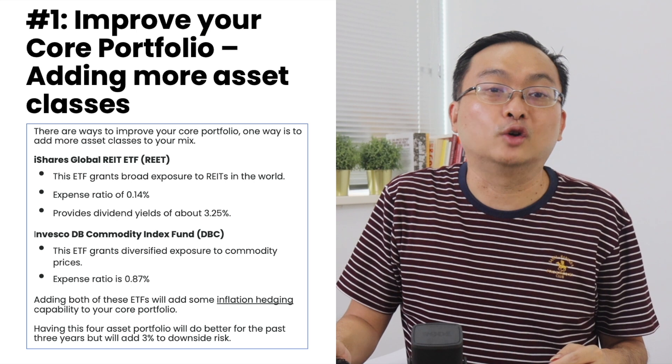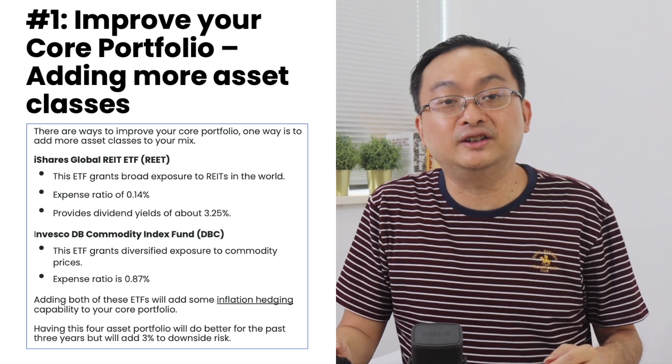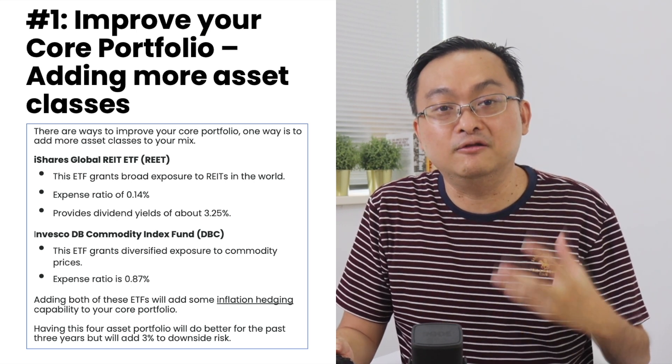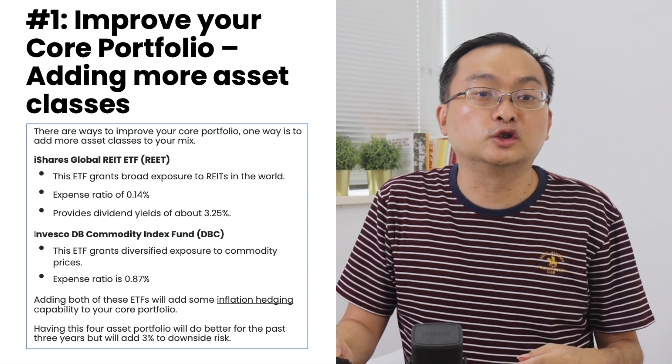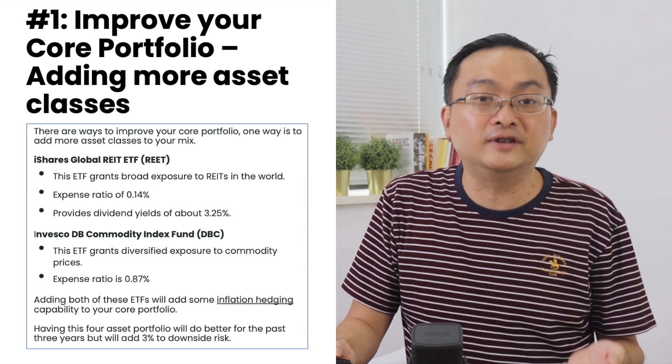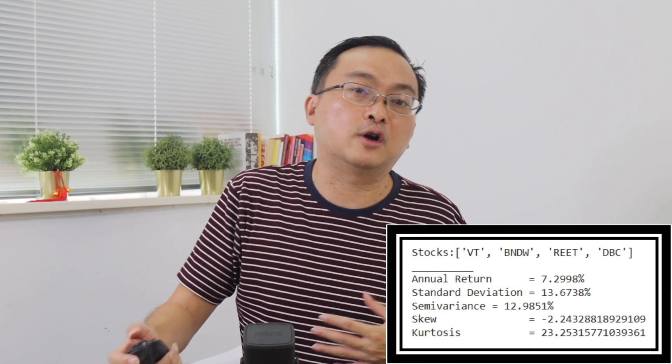The expense ratio is generally quite high because Commodity Index Funds generally require a complicated back end to trade. Adding both of these ETFs gains some inflation hedging capability for your core portfolio. If you have four of these asset classes in equal shares — 25% each — in this four-asset portfolio, you can actually improve your performance over the past three years.